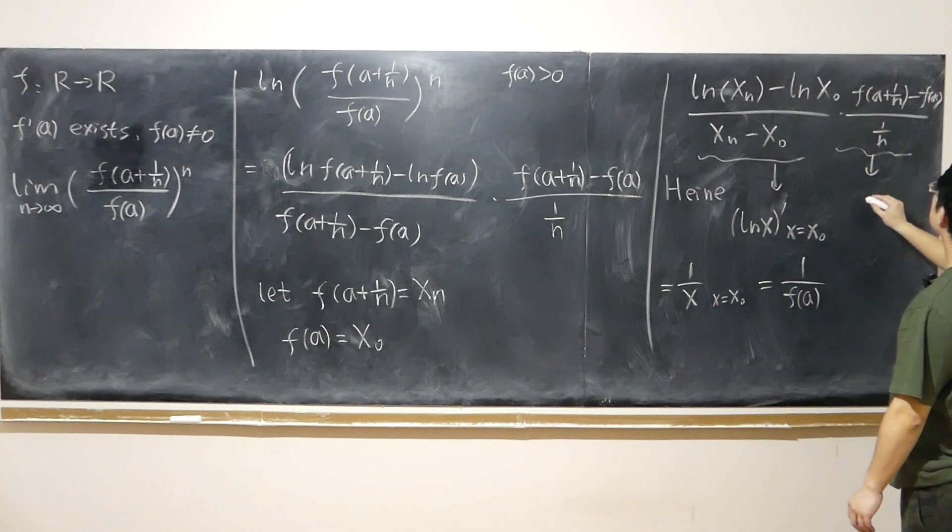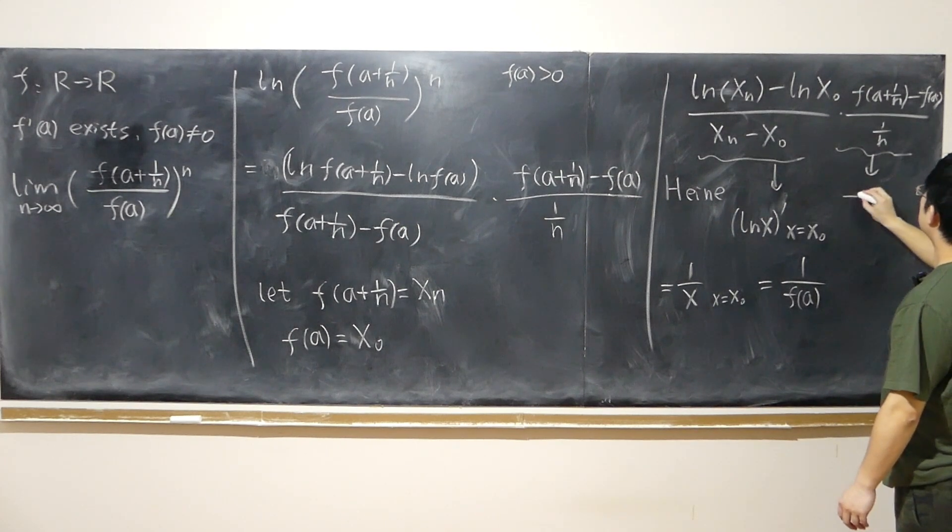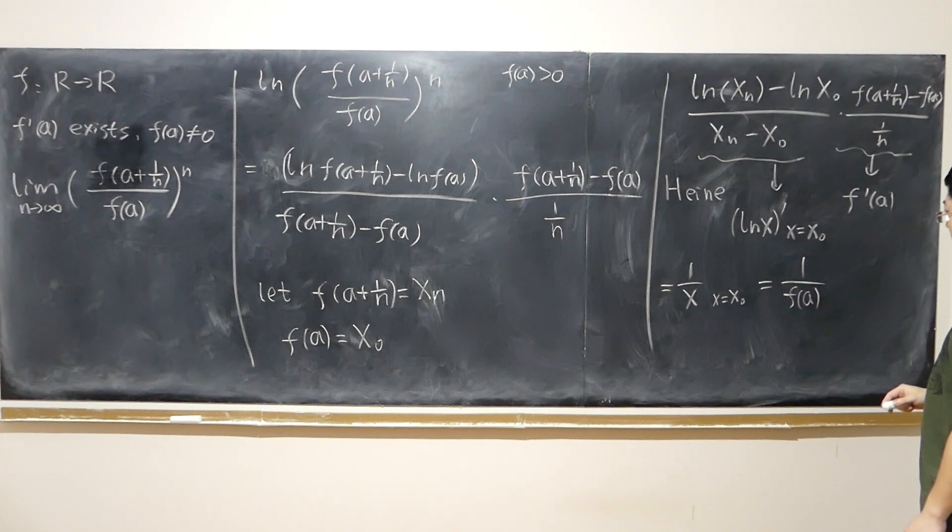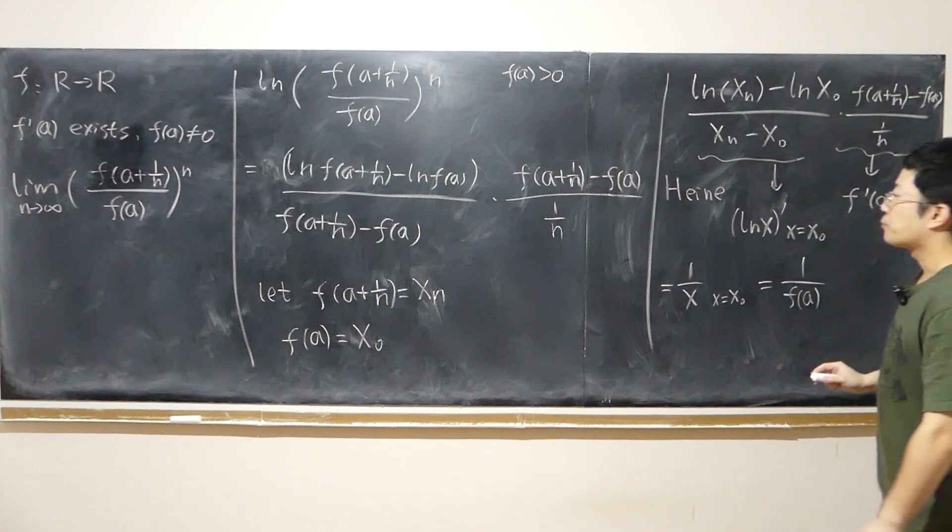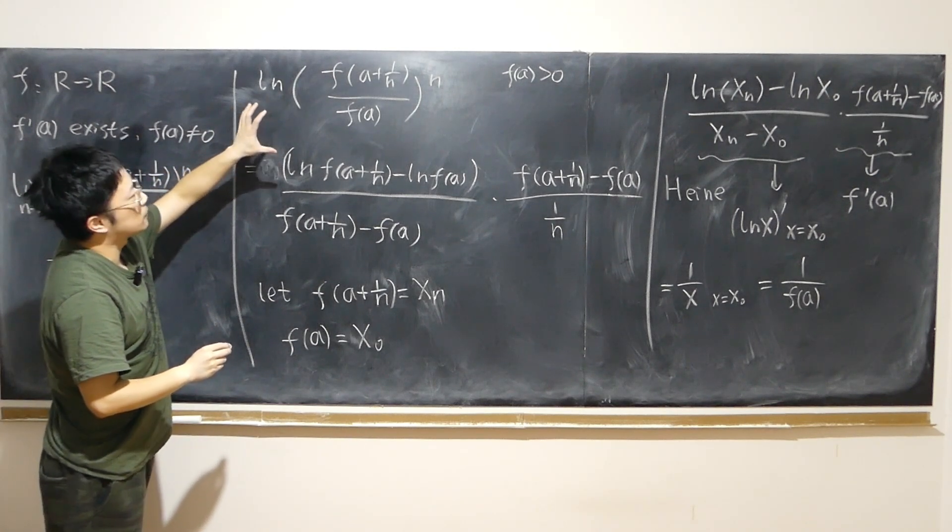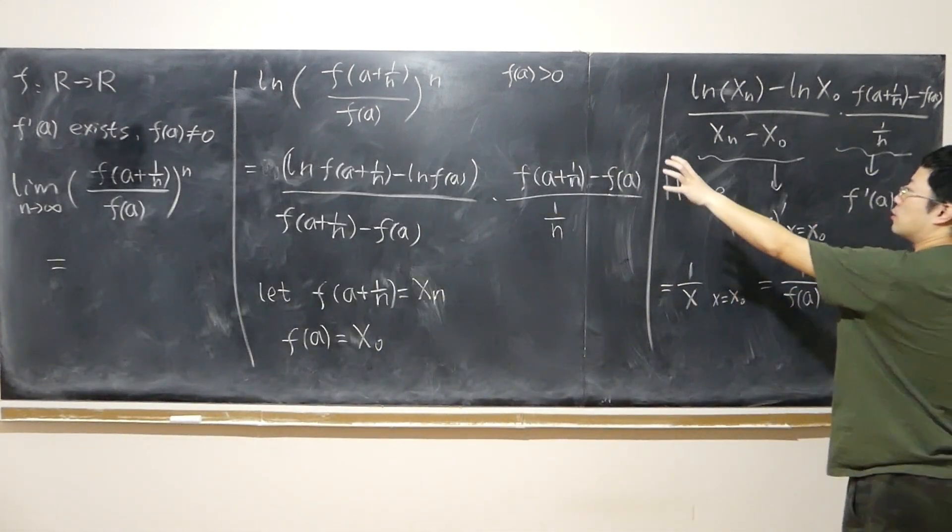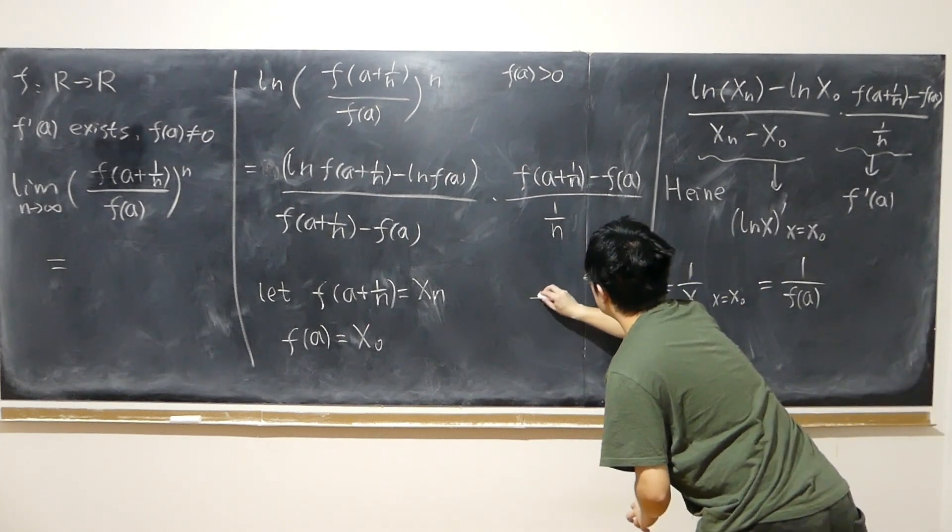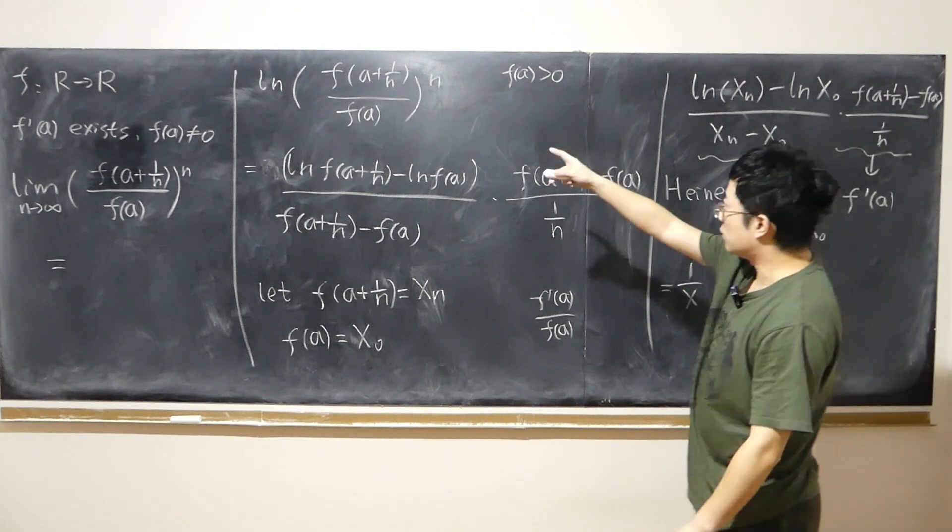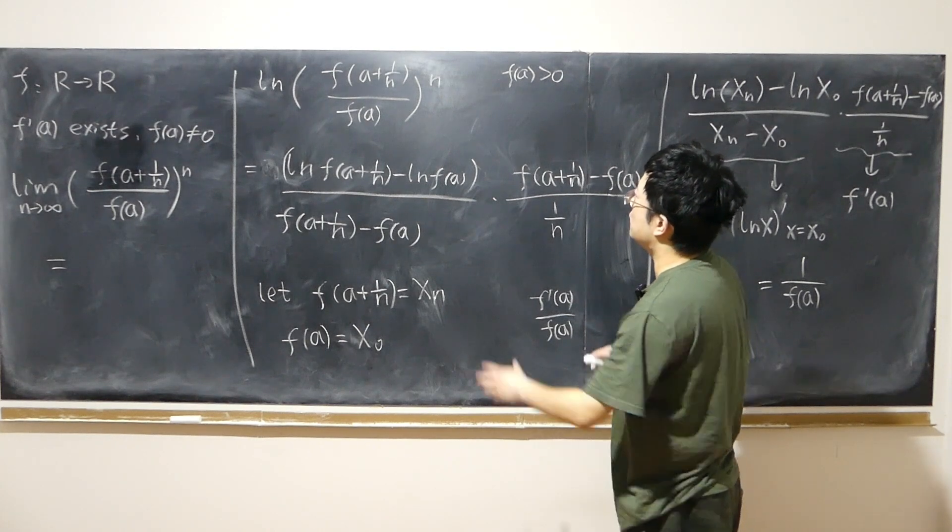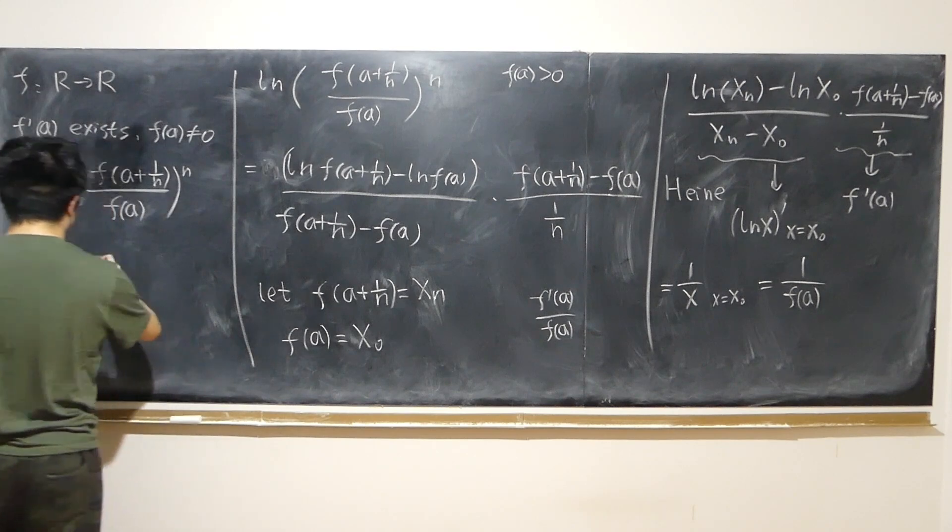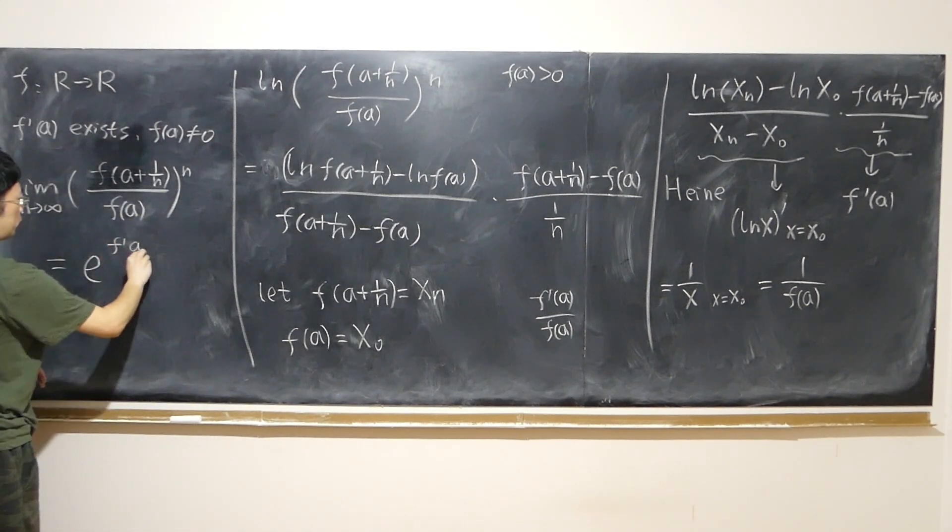So no problem. Derivative of log(x) at this point, this fixed number. And also, this will approach just for the same reason, derivative of f at a. So in the end, of course, it's log. So we have to use, so log of this thing approaches f'(a)/f(a). This is the result of log of this thing approaches that, which means the inside expression should approach e to the e^(f'(a)/f(a)).